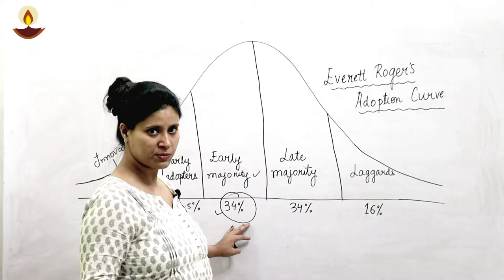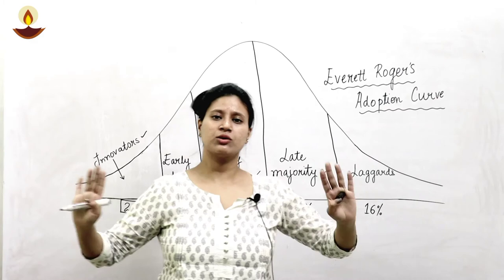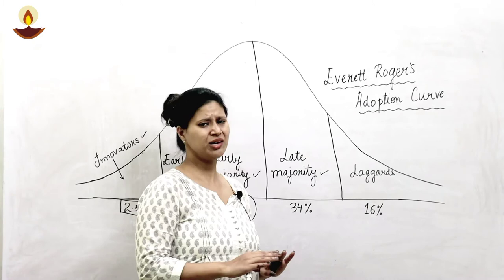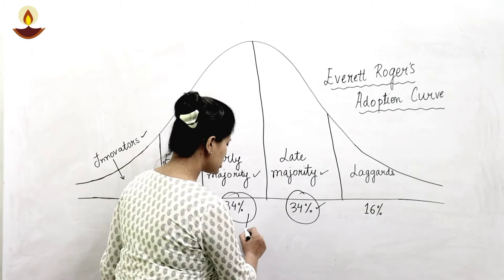Then our Late Majority. Late Majority are those people who don't like risk. When the market is mature, the technology has come, it has settled, everything has come, it has become common — after that, they buy that product. They don't like risk at all. Their percentage is also 34%. So Early Majority and Late Majority both have the same percentage.